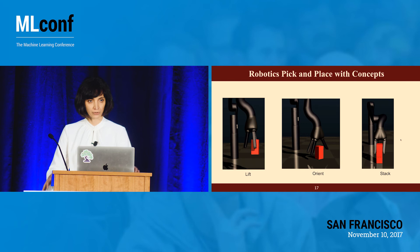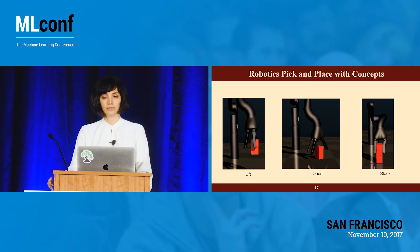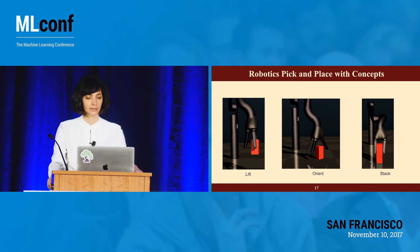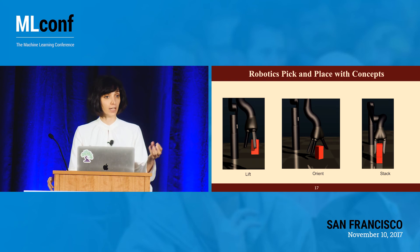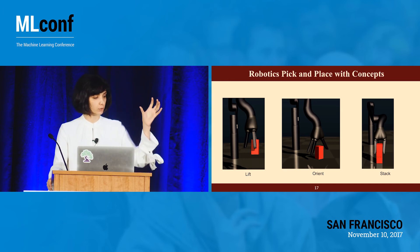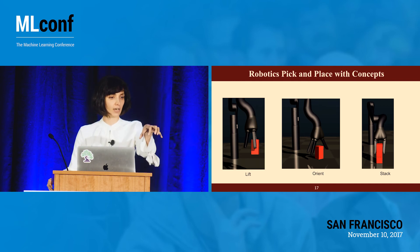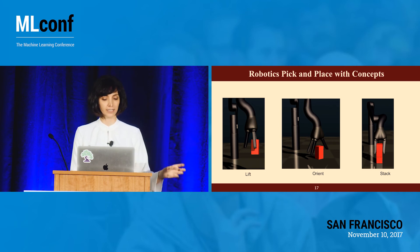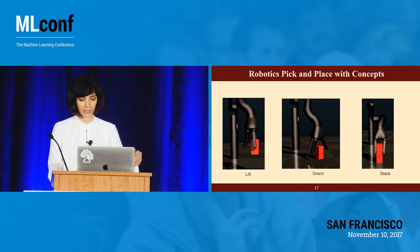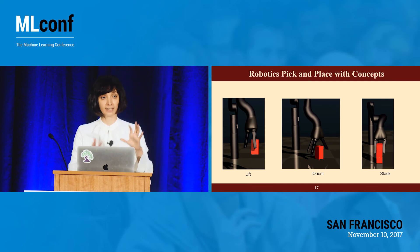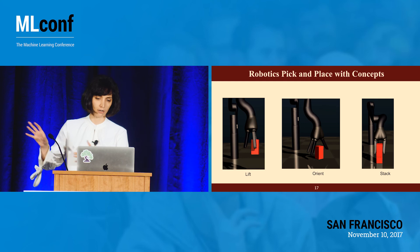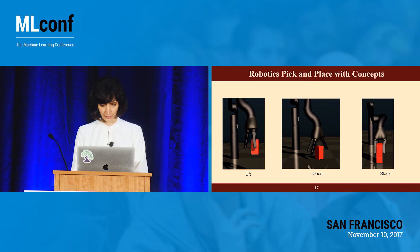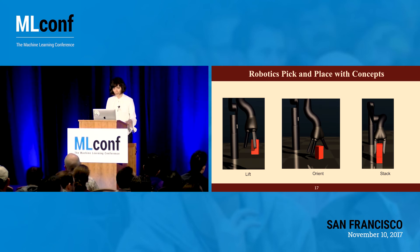At Banzai, we tested this approach on robotics pick-and-place tasks, which can be described in separate goals — like pick this cube and put it on top of another cube. We decompose this by defining concepts: lift, orient fingers towards lifting, and then stack on top. We train all these separately. The policy gradient method used here is TRPO (Trust Region Policy Optimization). That experiment was mostly done by Ross and Adi in Banzai.